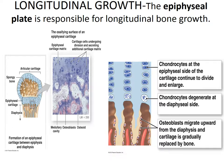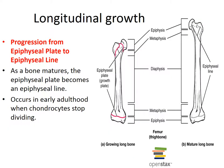The hyaline cartilage at the ends of the bone in the growth plate is eventually replaced entirely by bone. Once completely replaced, the epiphyseal plate is now called the epiphyseal line. This typically occurs in a person's early twenties, and as a result the person stops growing in height. Here you can see that progression in the growth plate.